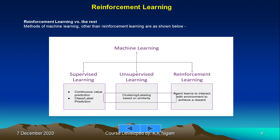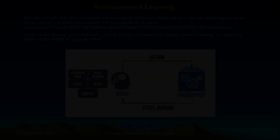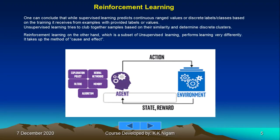Comparing reinforcement learning versus other methods: supervised learning, unsupervised learning, and reinforcement learning are all shown. While supervised learning maps continuous values to discrete classes based on labeled examples, and unsupervised learning clusters samples by similarity, reinforcement learning — a subset of unsupervised learning — performs learning very differently using cause and effect.